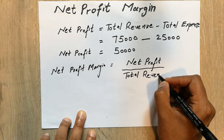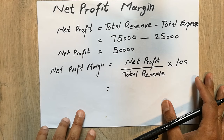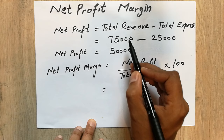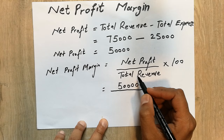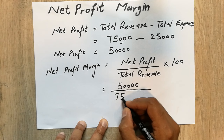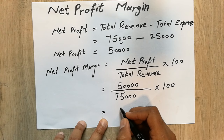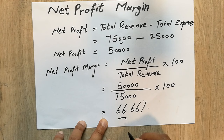Net profit margin is always expressed as a percentage. We already found the net profit of 50,000, so we put that value in: 50,000 divided by the total revenue of 75,000, then multiplied by 100. Our answer is 66.66%. This is the net profit margin.